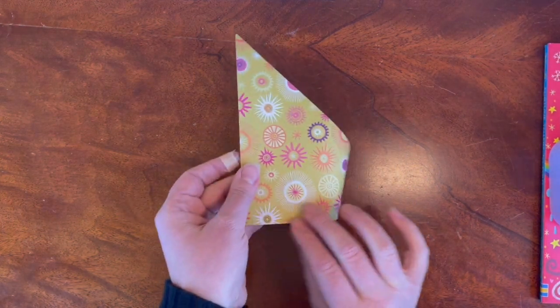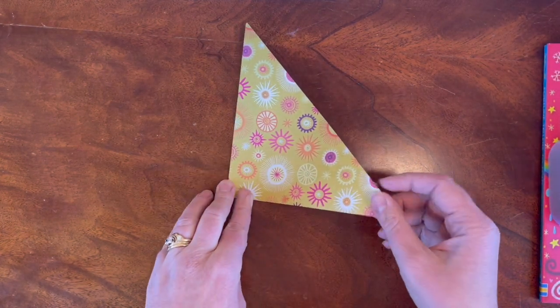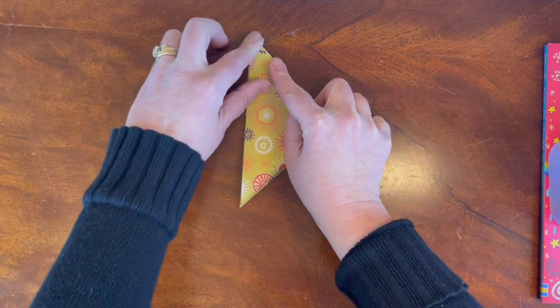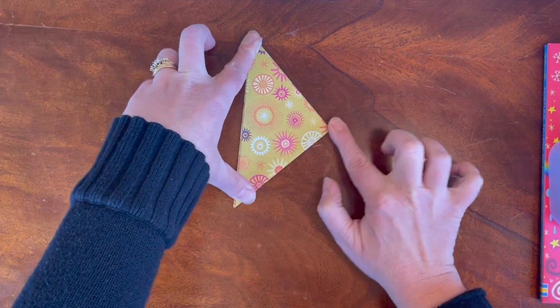Now turn the paper over and do the same with this point, folding it up to the center, lining up the edges and creasing the fold.